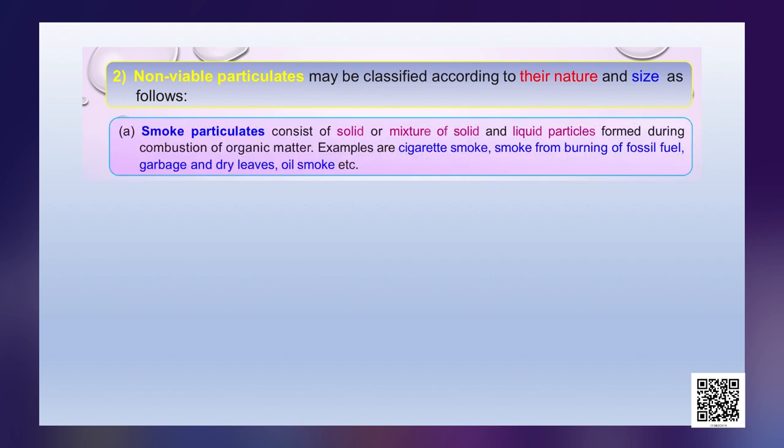The first type is smoke particulates. These consist of solid or a mixture of solid and liquid particles formed during the combustion of organic matter. Examples are cigarette smoke, smoke from burning of fossil fuels, garbage and dry leaves, and oil smoke.